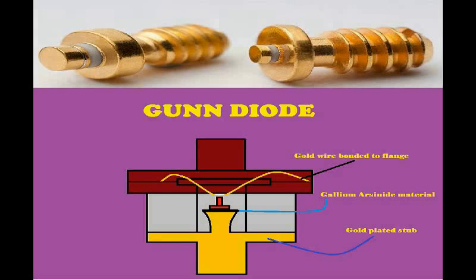When J.B. Gunn was conducting experiments, he applied a voltage above the threshold voltage of gallium arsenide — which is two to four kilovolts per centimeter. He observed periodic fluctuations of current passing through the gallium arsenide specimen. This experiment changed history with the introduction of Gunn diodes.